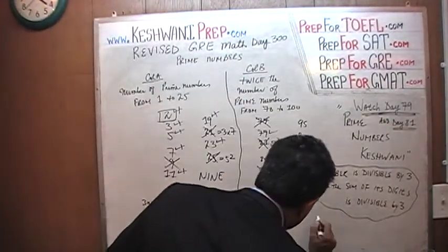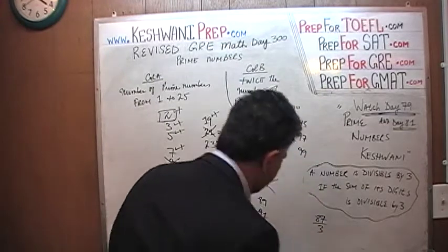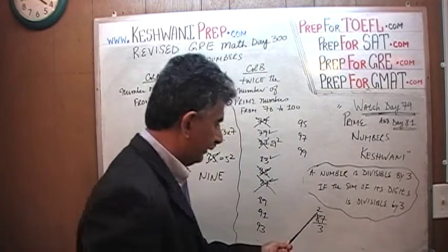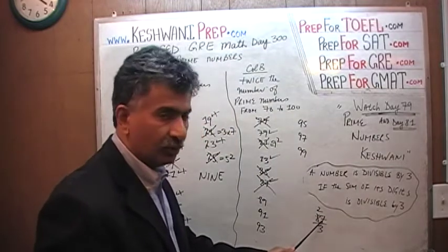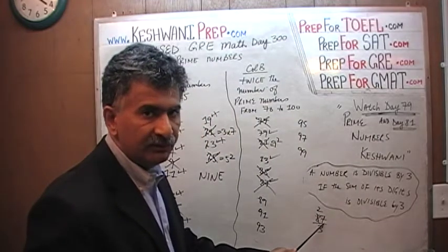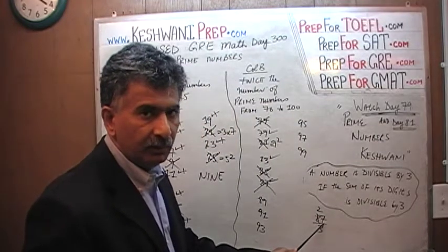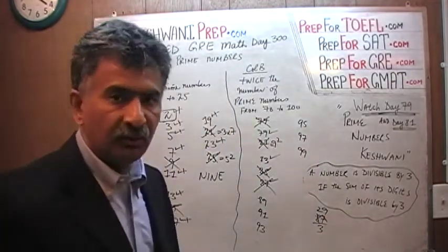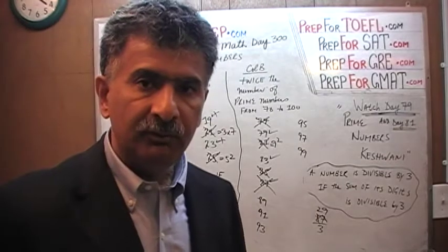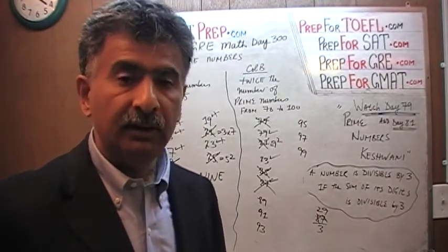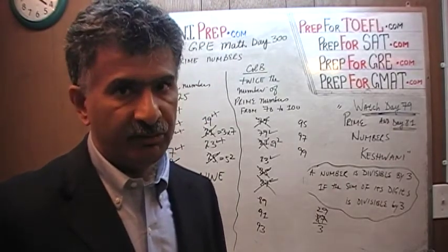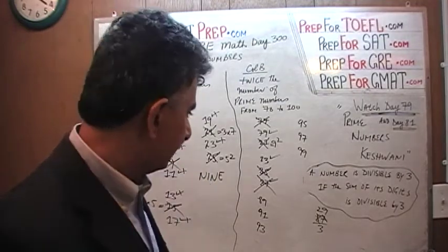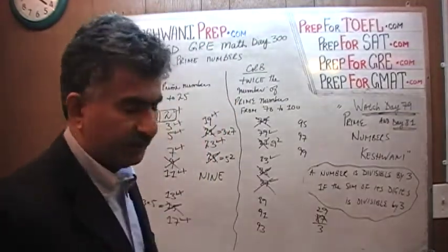Let's show this quickly: 87 divided by 3. How many 3s in 8? Two 3s, with a remainder of 2. That 2 joins the 7 to make 27. How many 3s in 27? Nine 3s. So 87 divided by 3 is 29. This makes sense because 90 is made up of thirty 3s, and 87 is just one less 3 than 90, so it has twenty-nine 3s. 87 is not a prime number.